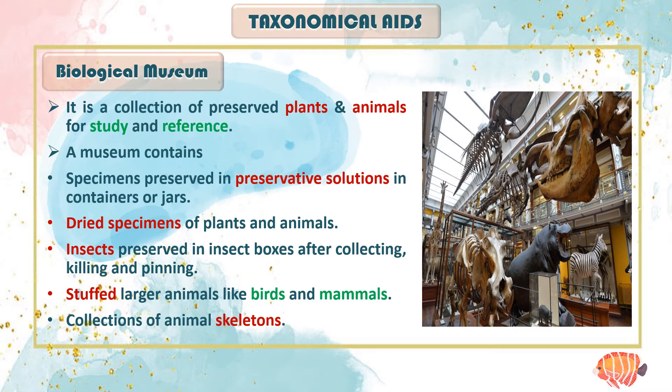In a museum, plants and animals are collected and preserved in preservative solutions inside containers and jars. The preservative solution used is formaldehyde, also called formalin. Anything placed in it will not rot or decompose and will remain intact for a long time. For example, a dead octopus can be collected, placed in a jar filled with formaldehyde, and sealed airtight. Similarly, algae or plants collected from anywhere are stored in small jars or containers. Dried specimens of plants and animals are also kept there.